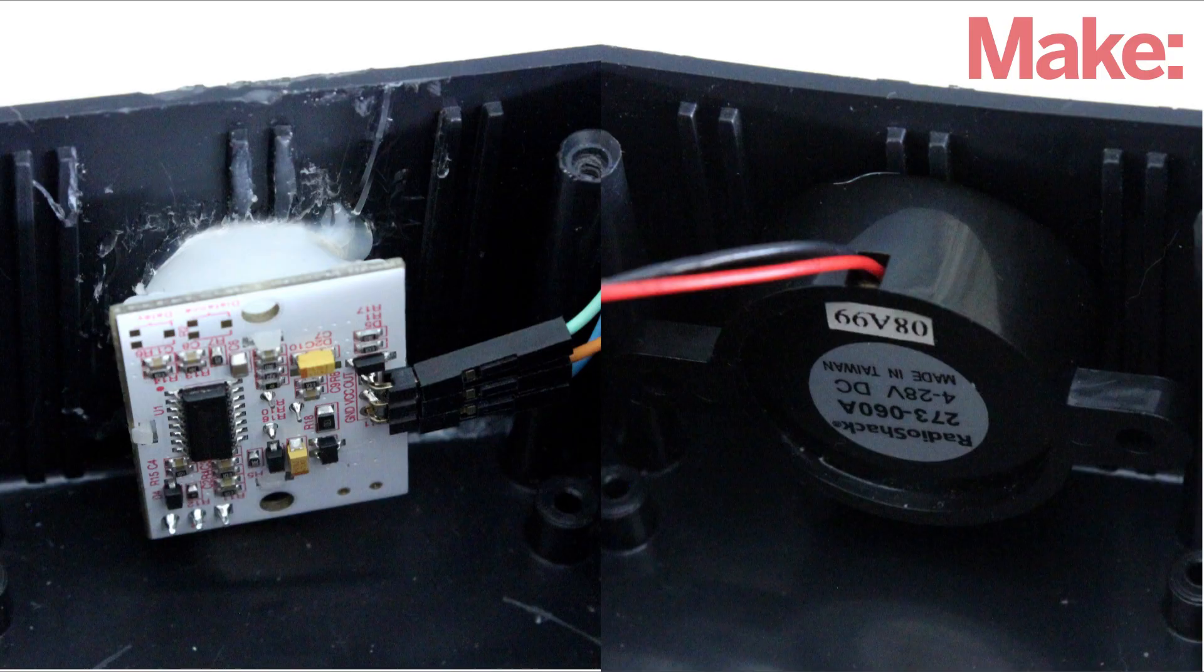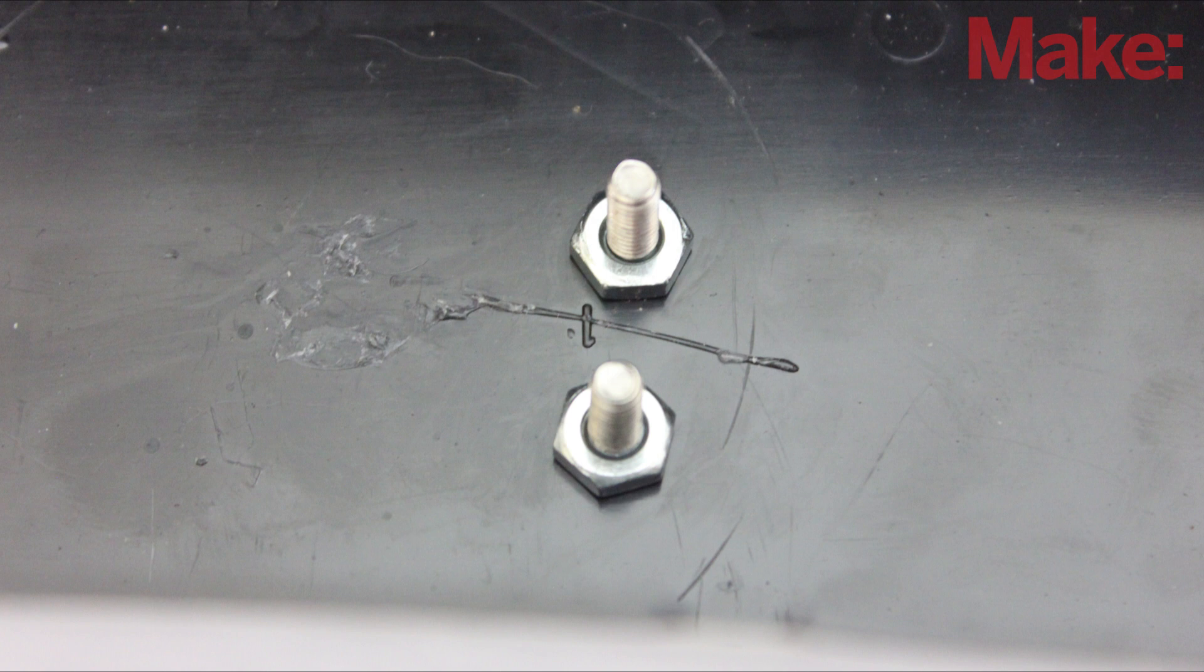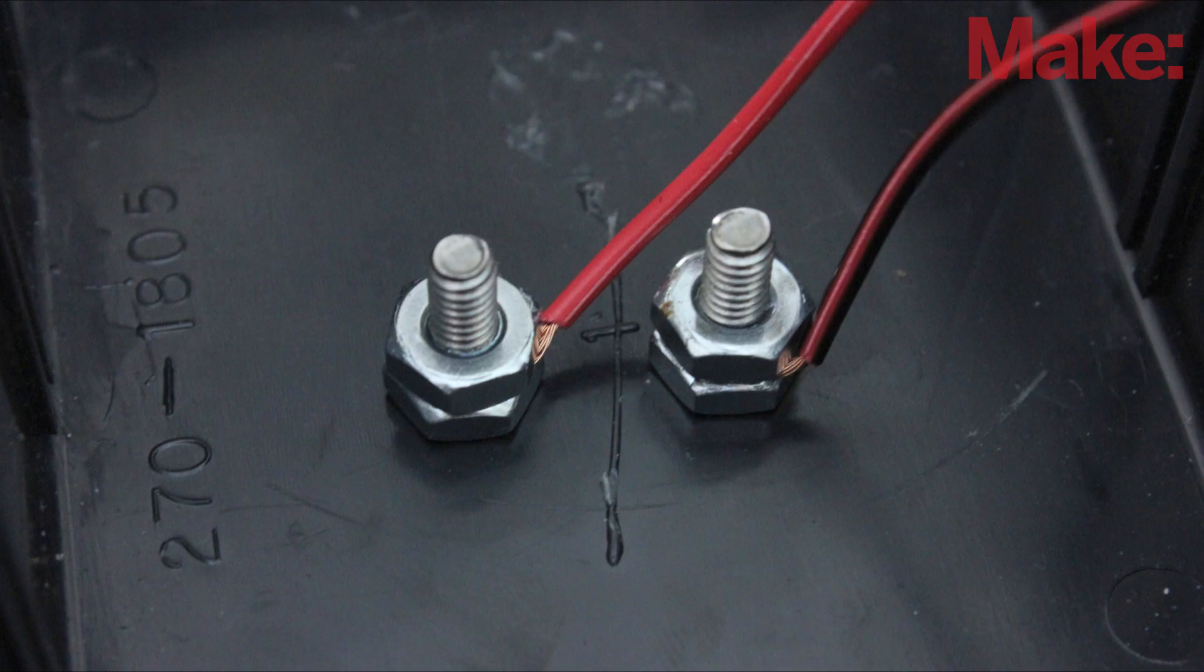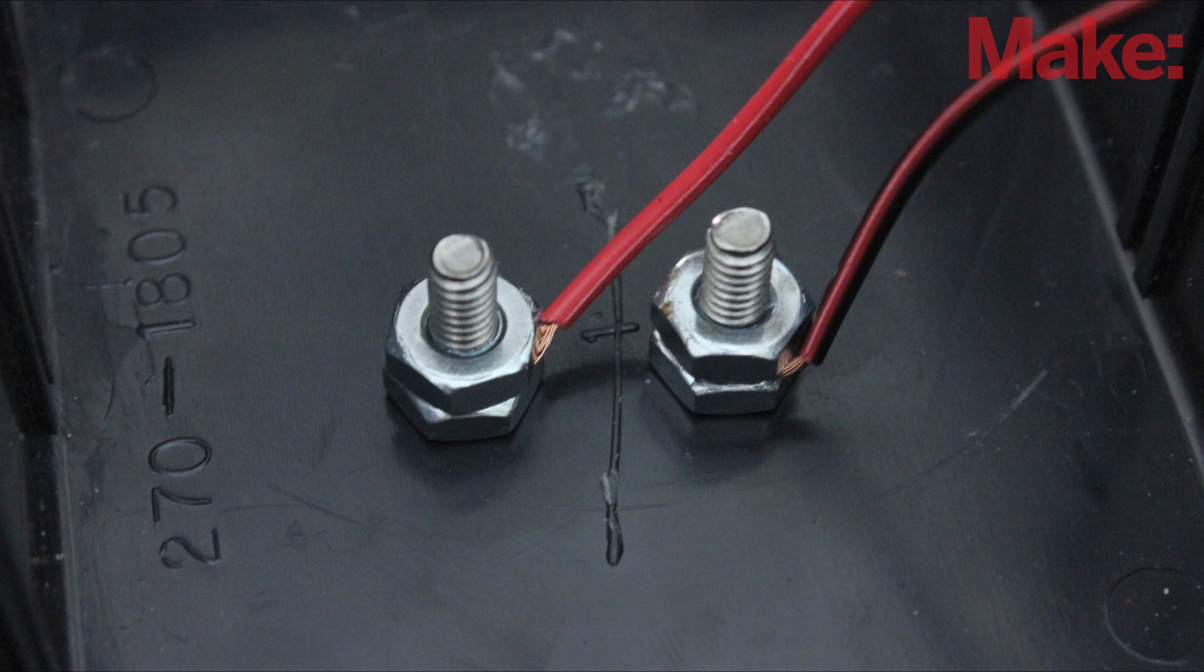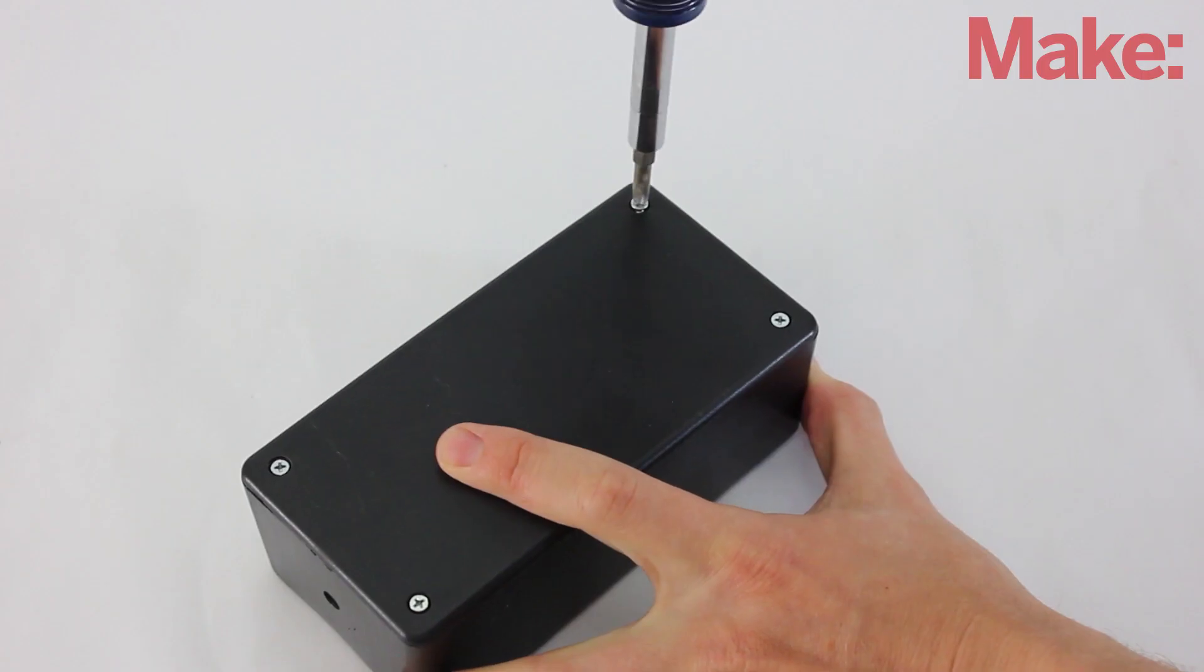Hot glue the motion sensor and the buzzer to the inside of the housing. Attach the machine screws with a pair of nuts. Then connect the resistor jumper wires to the screws and add another pair of nuts to hold them in place. Lastly, fit the Arduino inside the housing and close it up.